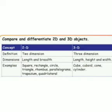Next, compare and differentiate 2D and 3D objects. Definition: 2D, two dimension. 3D, three dimension. 2D dimensions are length and breadth. 3D dimensions are length, height and breadth also.